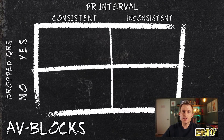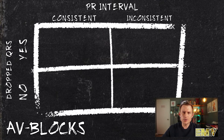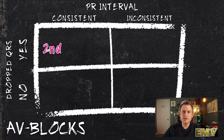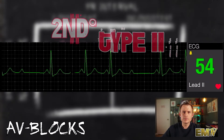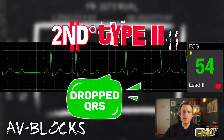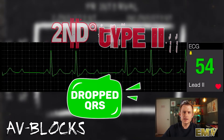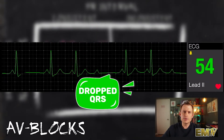Now let's go ahead and fill out the table. For the top left corner, a rhythm that has a consistent PR Interval that drops a QRS complex is a second degree type 2. As you can see, the PR Interval remains consistent; however, there are drops in the QRS complexes.